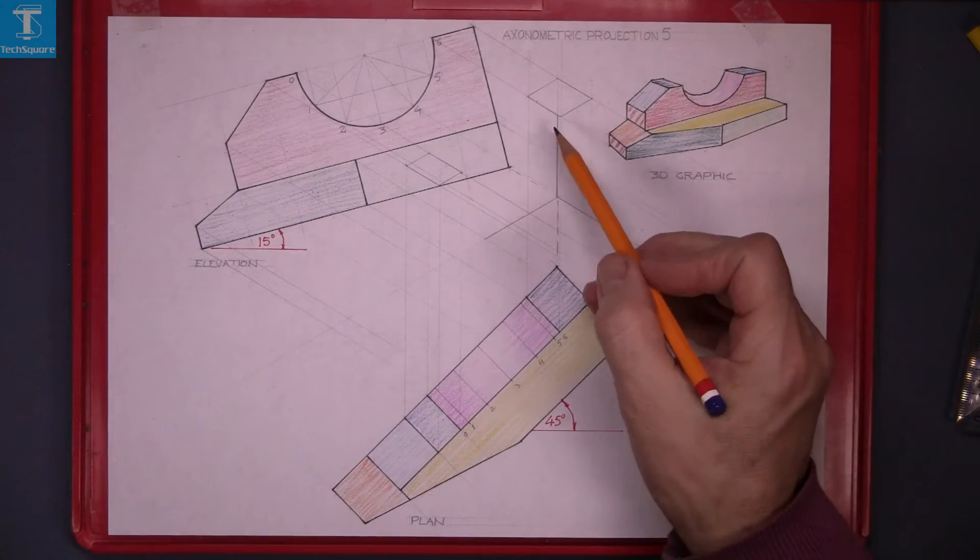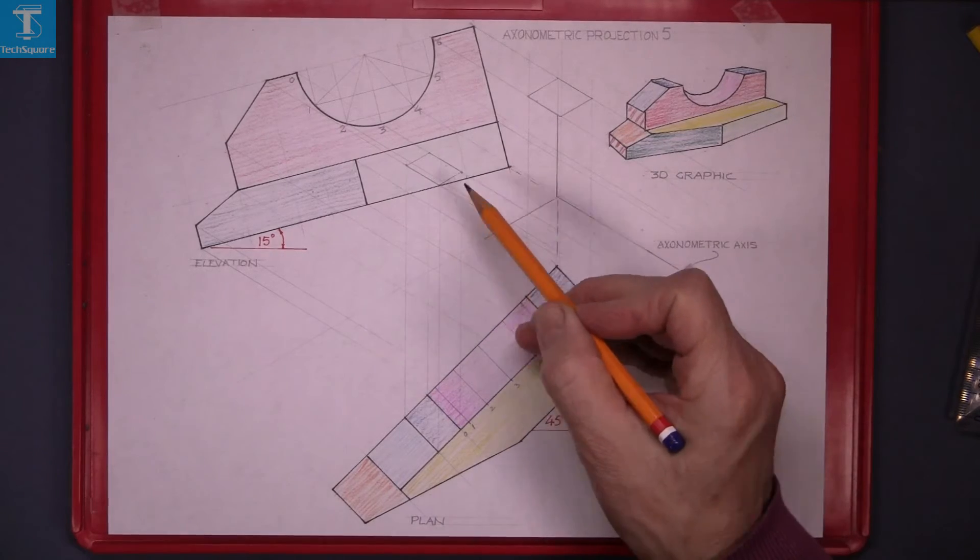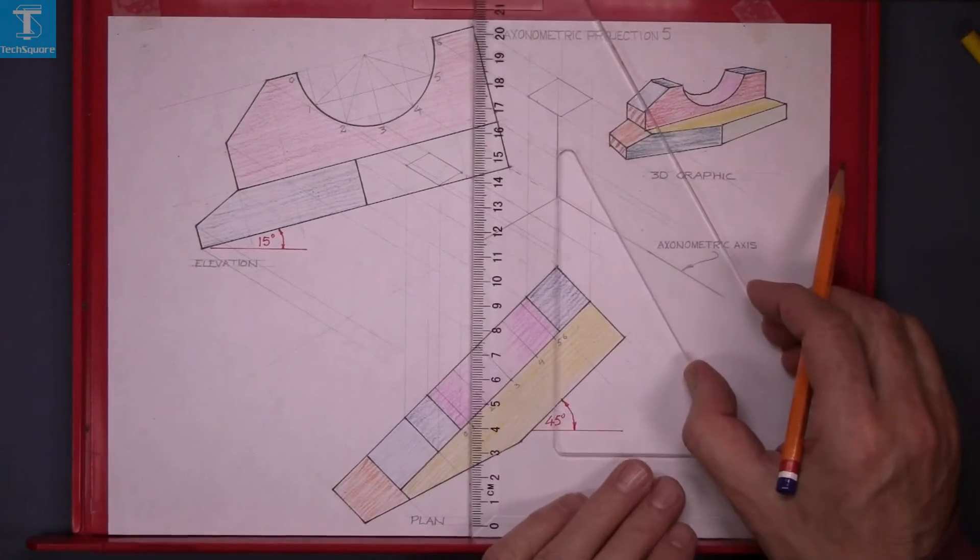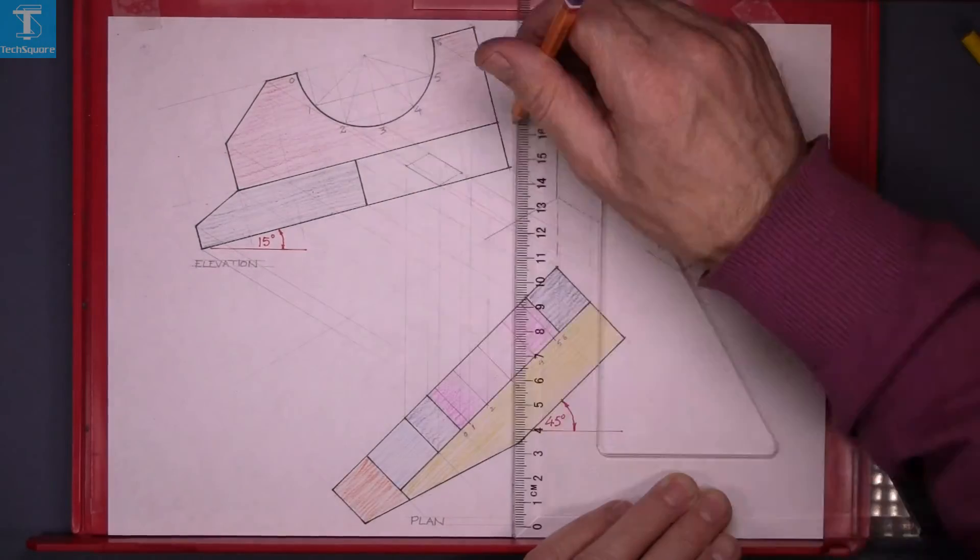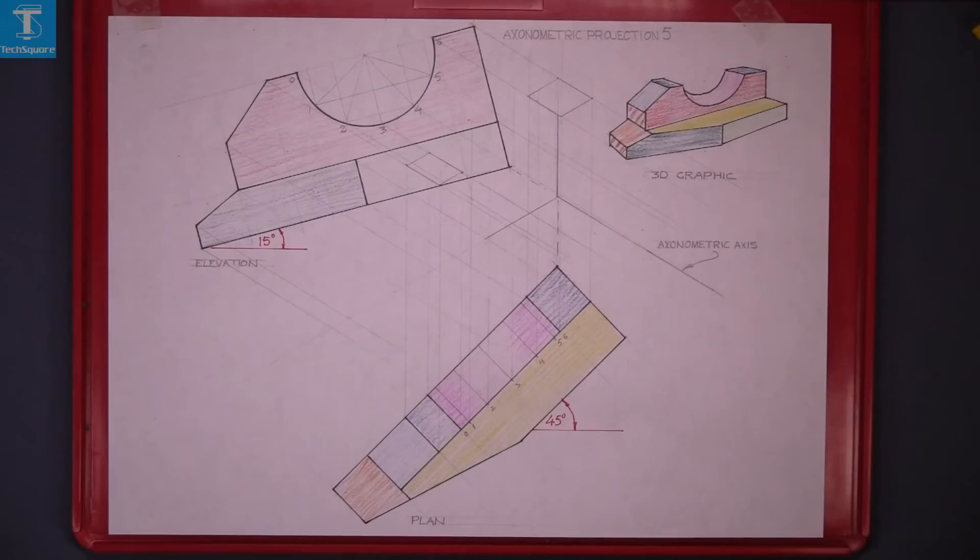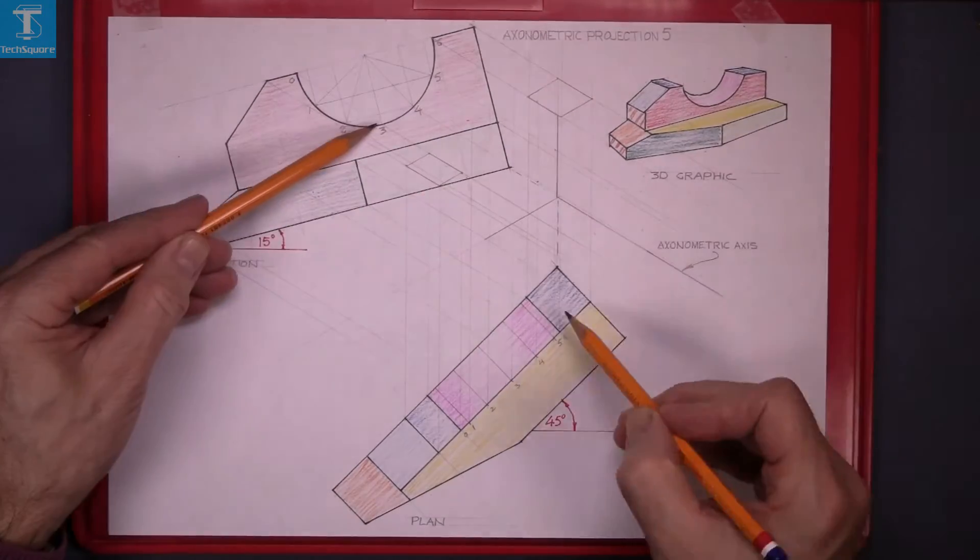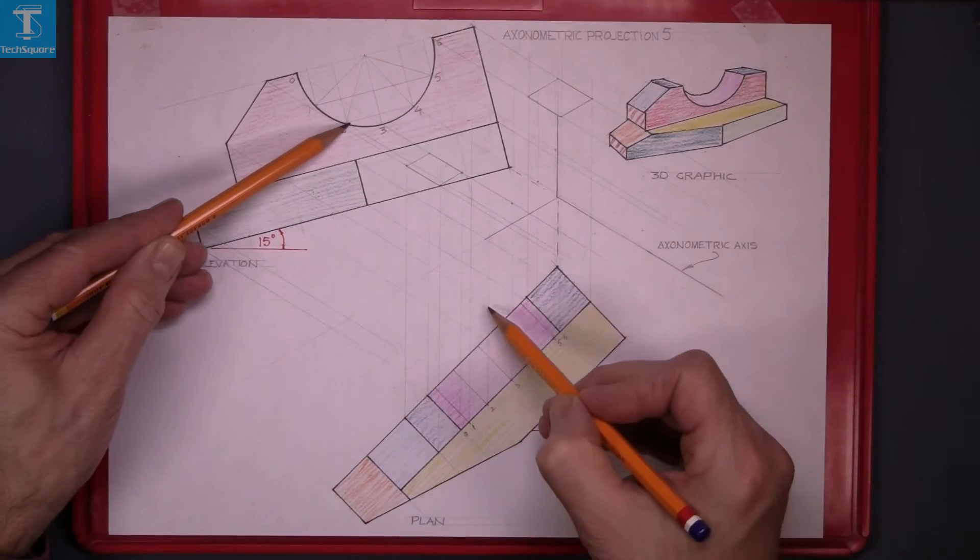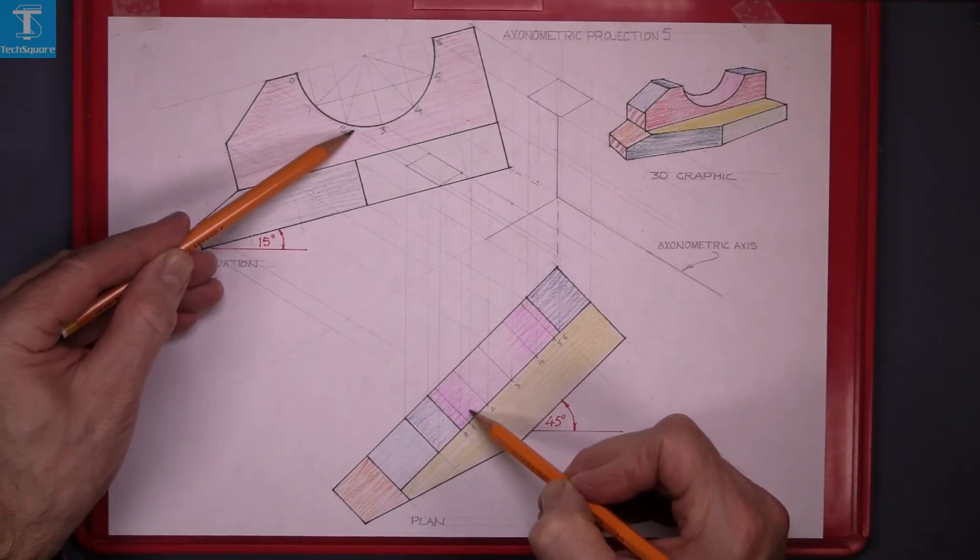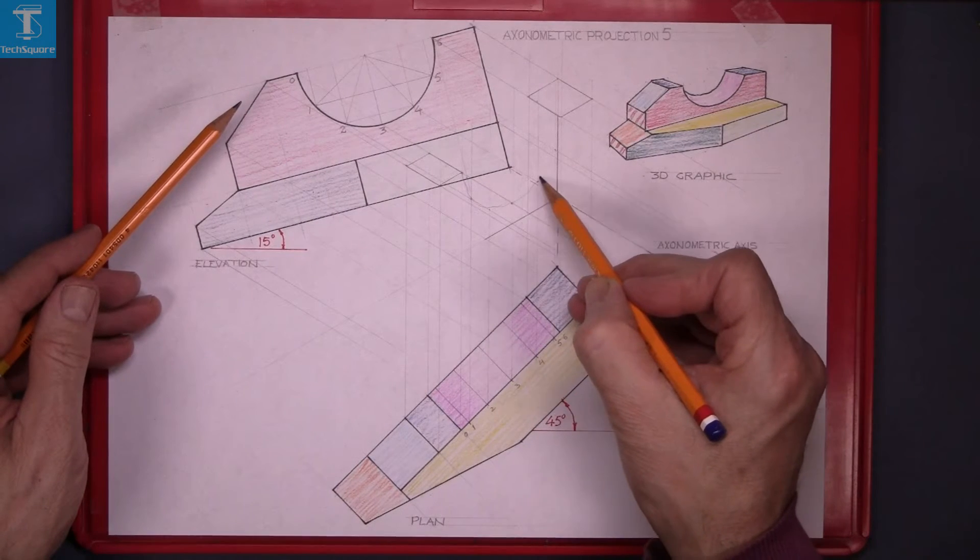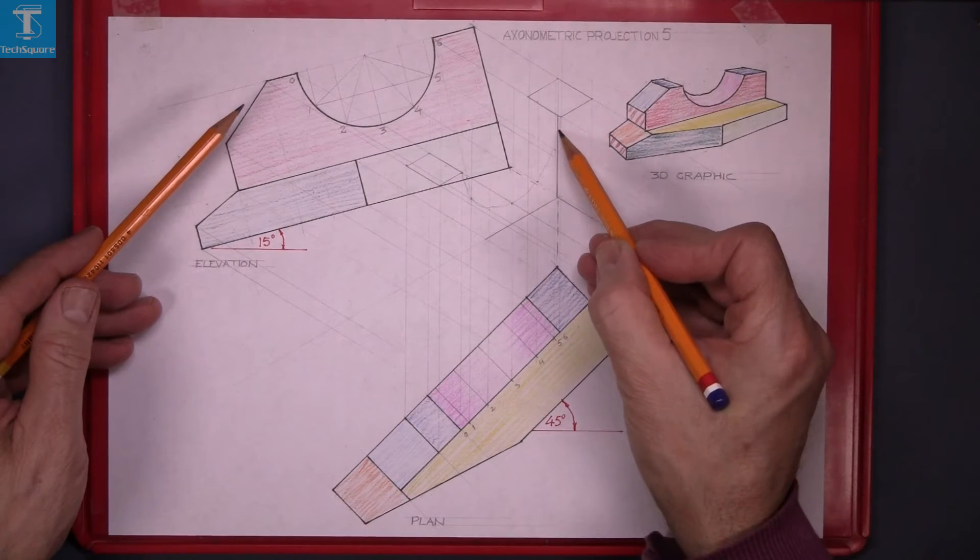Now the circle here is going to be in this position. So bring up the points from the plan. 1, 2, 3, 4, 5 and now trace them in from the elevation and the plan and indicate each point as you find it. And now freehand curve through those points. That's the isometric of the circle.